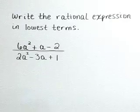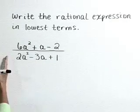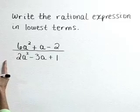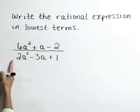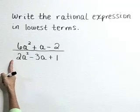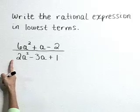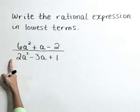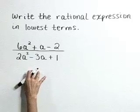Write the rational expression in lowest terms: 6a squared plus a minus 2 over 2a squared minus 3a plus 1. Well, in order to write this rational expression in lowest terms, we need to first factor it.